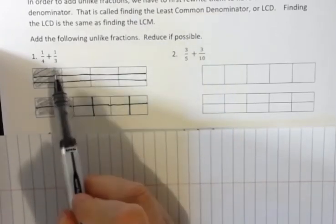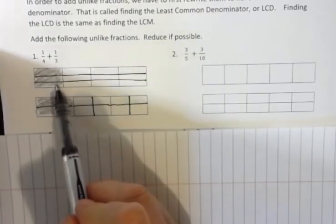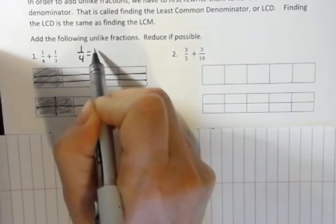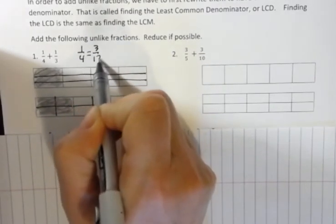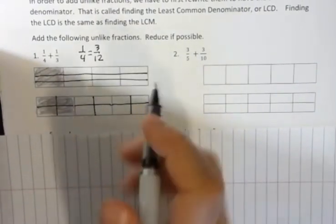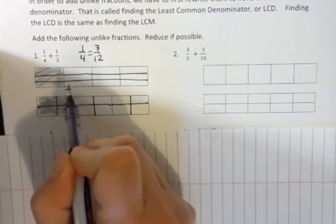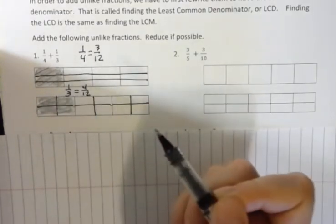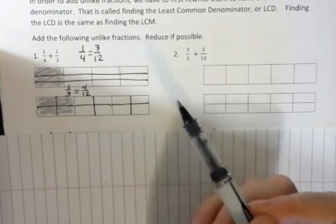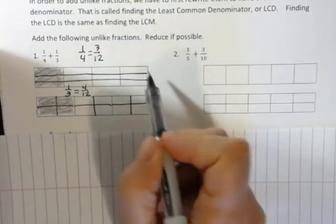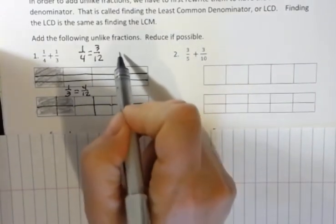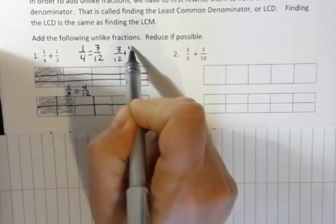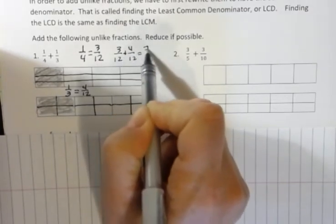So, now I can add those together, because I have 3 out of 12. So, 1 fourth is the same as 3 twelfths. And then I have 4, so 1 third is the same as 4 twelfths. And now that I have those written as twelfths, I can add those together, and we can see that we're going to get 3 twelfths plus 4 twelfths, which is 7 twelfths.